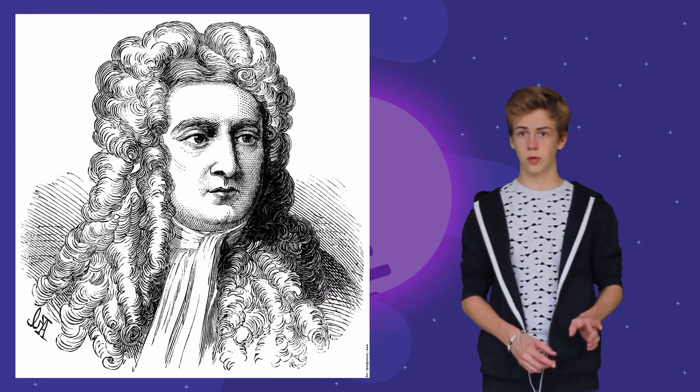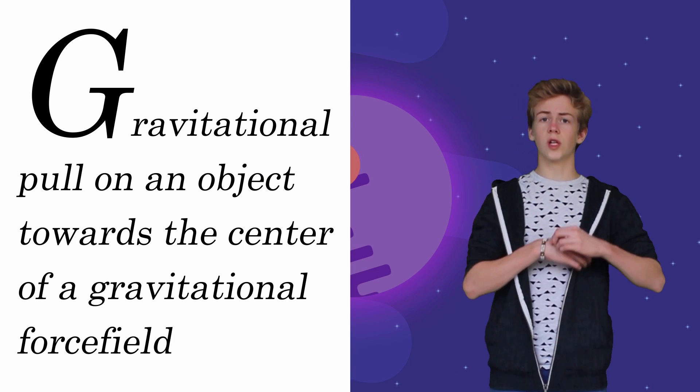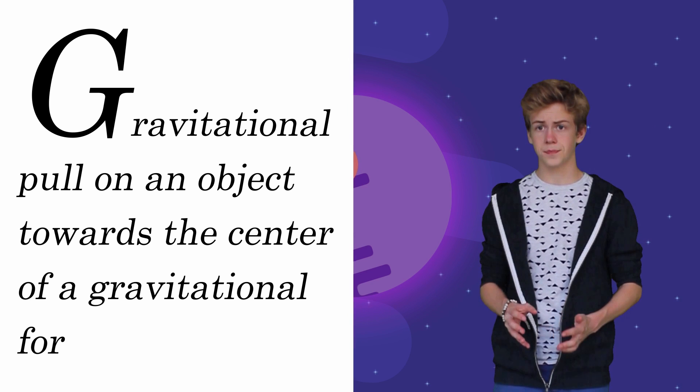You are probably all familiar with the theory of gravity formulated by Sir Isaac Newton. This theory explains the gravitational pull on an object towards the center of a gravitational force field. But what Newton didn't know was what gravitation was or how it looked like. It was Einstein who proved Newton wrong.